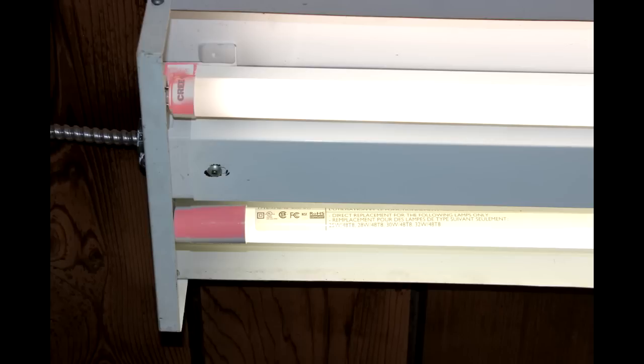You notice the first difference: the Philips has a bit more of an opaque end than the Cree. The Cree tends to put light all the way to the end of the fixture, emulating that fluorescent bulb just a little bit better.